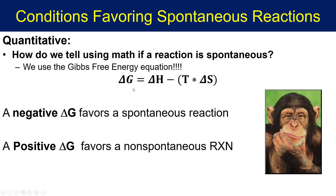Delta G stands for the change in free energy. When you have a negative delta G, it means that a spontaneous reaction is favored — meaning there was a release of free energy, just like when you have a delta H that's negative, there was a release of heat energy. Positive delta G values will favor non-spontaneous processes. If you have an enthalpy, a temperature, and an entropy value, you can plug them all in and figure out the value of the free energy.